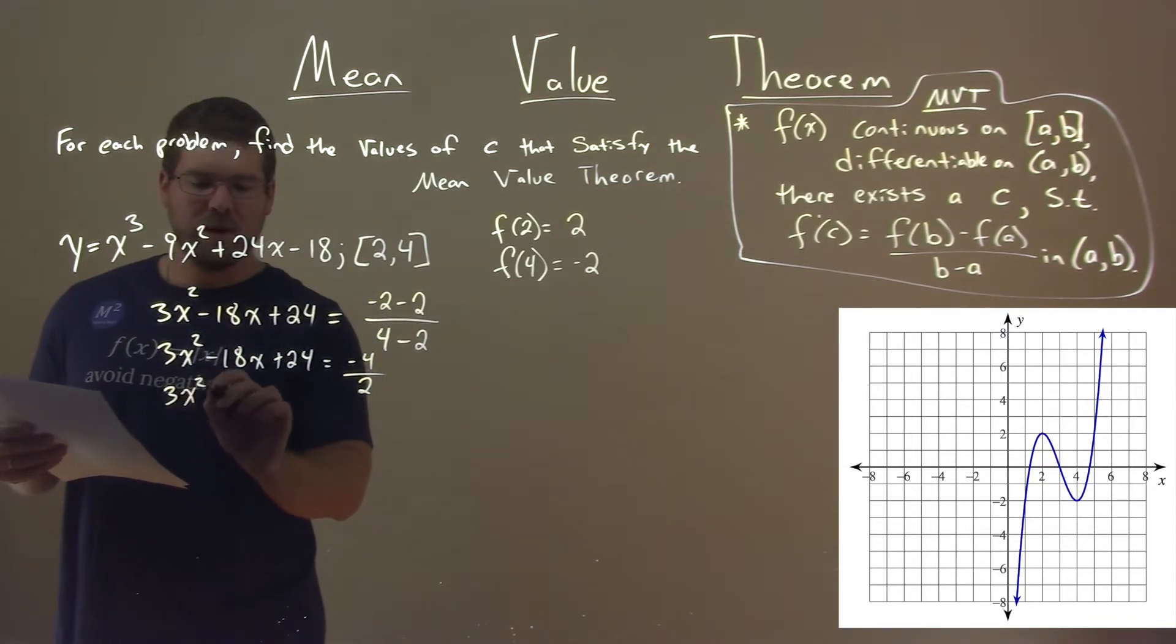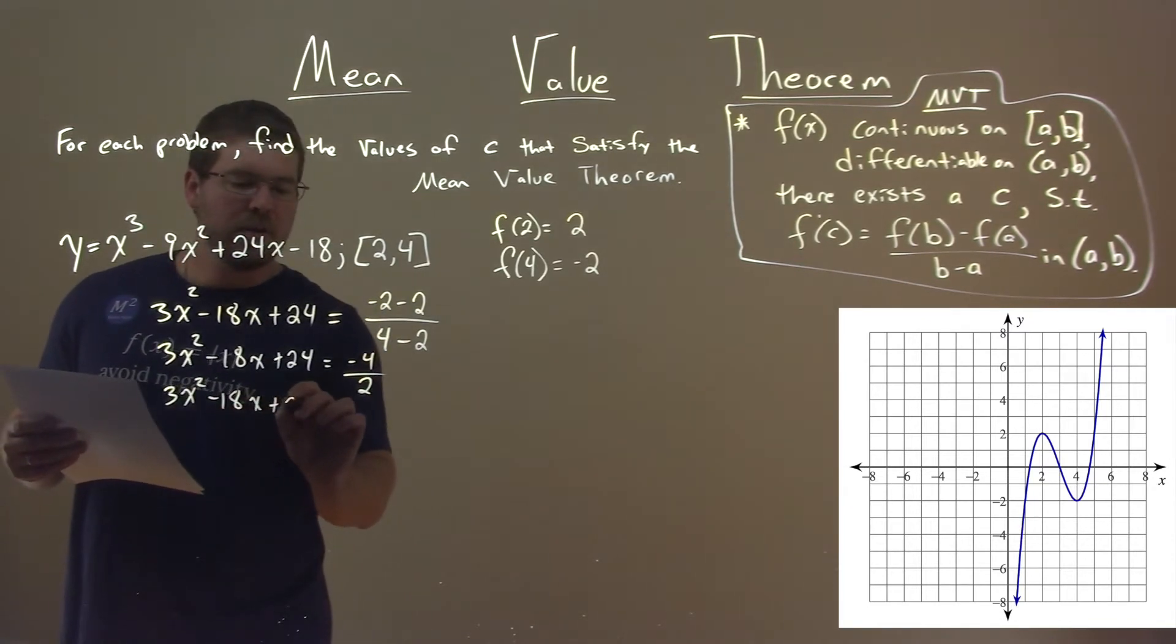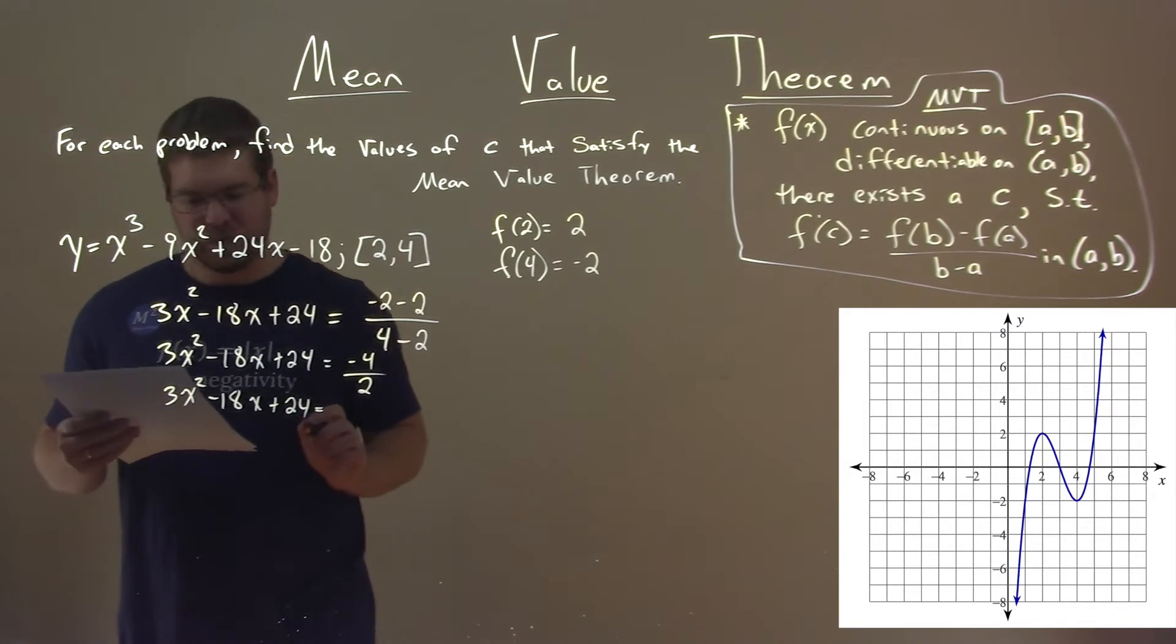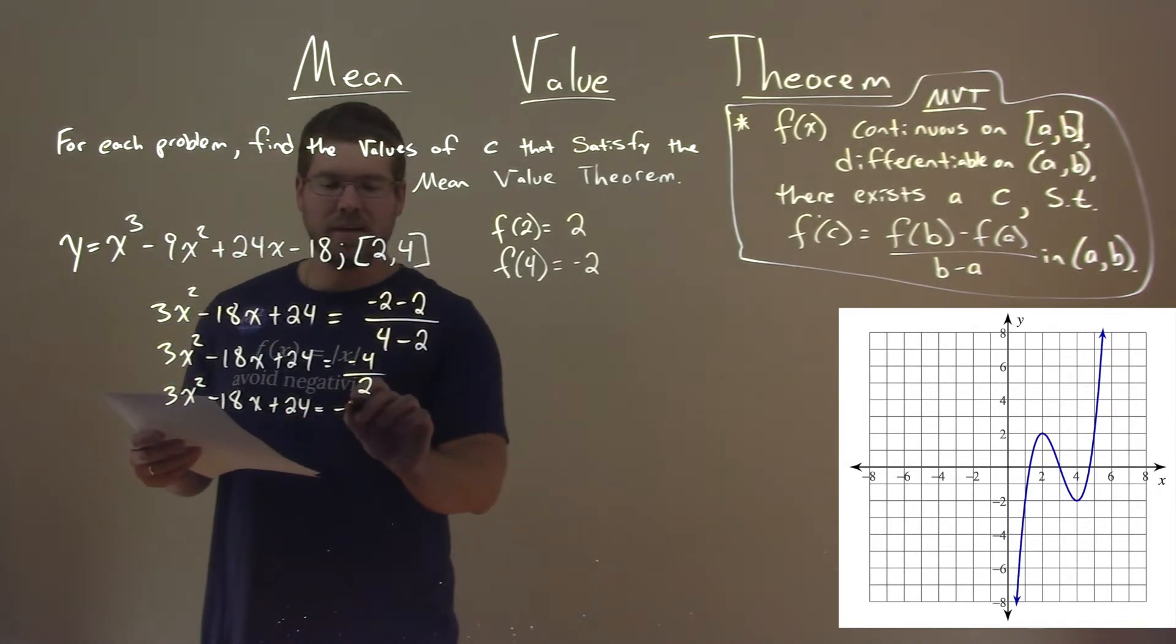From there, 3x squared minus 18x plus 24 is equal to negative 4 divided by 2 is a negative 2.